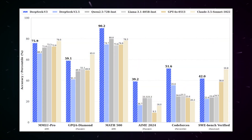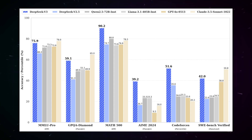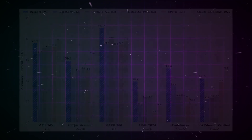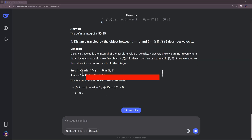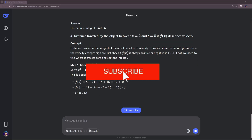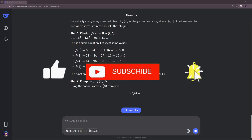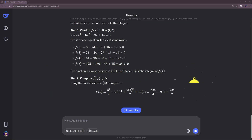In benchmark tests, it shows impressive results. On LiveBench, a test for coding skills, it performs excellently. Also in mathematical tasks and general comprehension tests like MMLU, it is on par with top models such as Claude 3.7 Sonnet. But caution — benchmarks are like school grades. They give an impression, but not the complete picture. They are often created under ideal conditions and don't always reflect the real user experience, so we shouldn't blindly trust them.